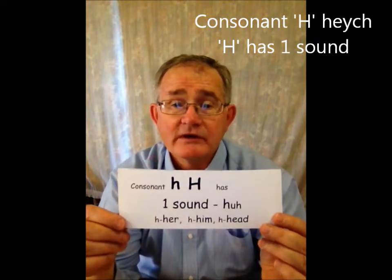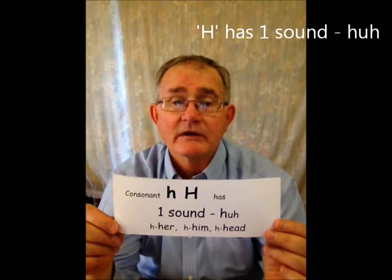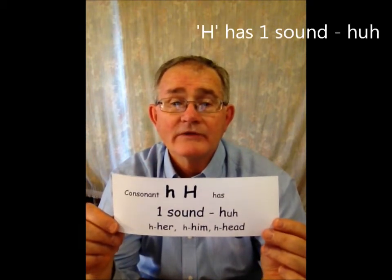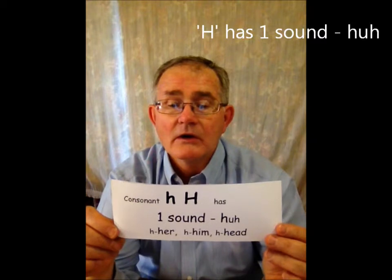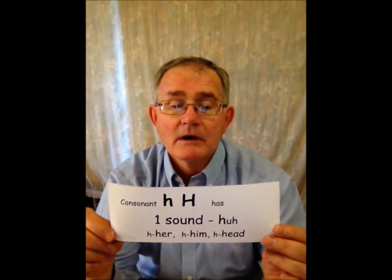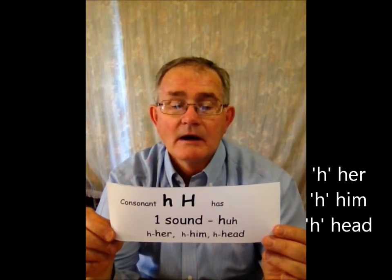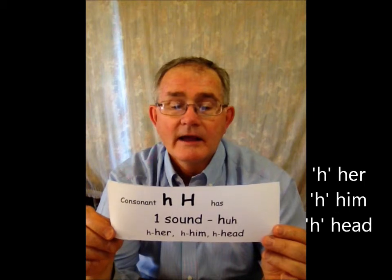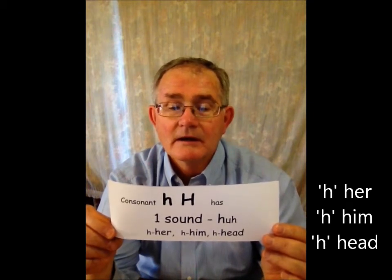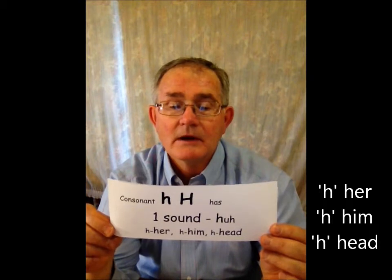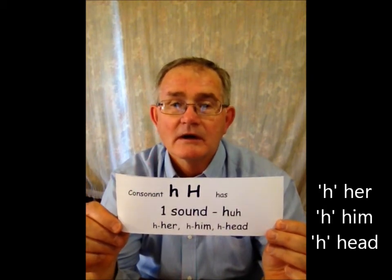H — consonant H. H has one sound: Ha. Ha — her. Ha — him. Ha — head. Her, him, head. H has one sound: Ha.